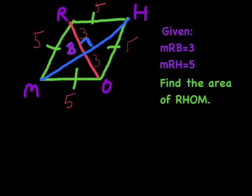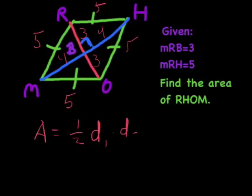And that means these are all going to be 3-4-5 right triangles. That's 4. This is 4.